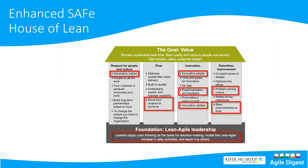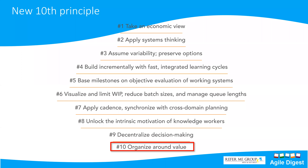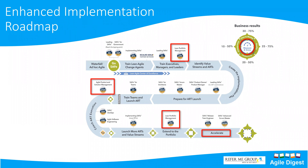The implementation roadmap has also been updated in 5.0: Lean Portfolio Management (LPM) has been added at both the beginning and end of the roadmap. Agile Product and Solution Management has been added as a new certification/competency in the roadmap. This roadmap maps which certifications and skill sets are needed at each step — from waterfall or ad hoc agile, through the tipping point of going SAFe, to extending the portfolio.